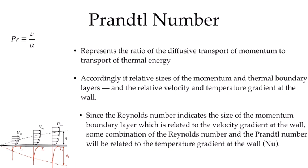Since we know from our Reynolds number video that the Reynolds number indicates the size of the momentum boundary layer, we will find that in order to characterize the thermal boundary layer — or ultimately characterize the gradient at the wall and the heat transfer — it's going to be related to some function of the Reynolds number and the Prandtl number. The Reynolds number tells us something about the momentum boundary layer size, and the Prandtl number tells us how that size relates to the thermal boundary layer size, and ultimately how the velocity gradient relates to the temperature gradient. So we'll expect that Nusselt number correlations will be functions of the Reynolds number and the Prandtl number.